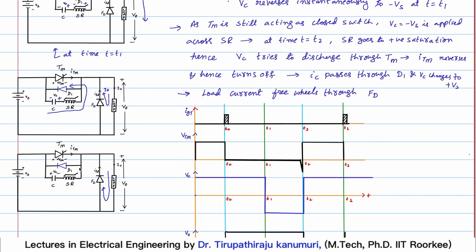The capacitor charges in the opposite direction instantaneously through diode D1. Once charged, the diode returns to its normal state and the circuit is back to the initial condition, ready to conduct again. When the main thyristor is off and D1 is also off, the load current is supplied through the freewheeling diode. The load current remains constant due to the high value of load inductance - it either passes through the main thyristor or through the freewheeling diode.